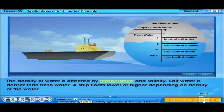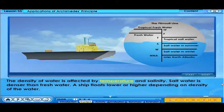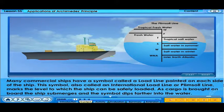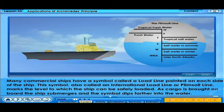The density of water is affected by temperature and salinity. Salt water is denser than fresh water, and a ship floats lower or higher depending on the density of the water. Many commercial ships have a symbol called a load line painted on each side of the ship, also called an international load line or Plimsoll line, which marks the level to which the ship can be safely loaded. As cargo is brought on board, the ship submerges and the symbol dips further into the water.